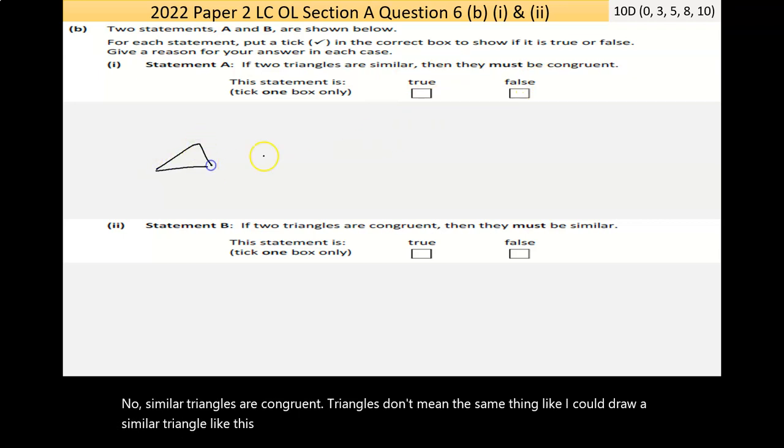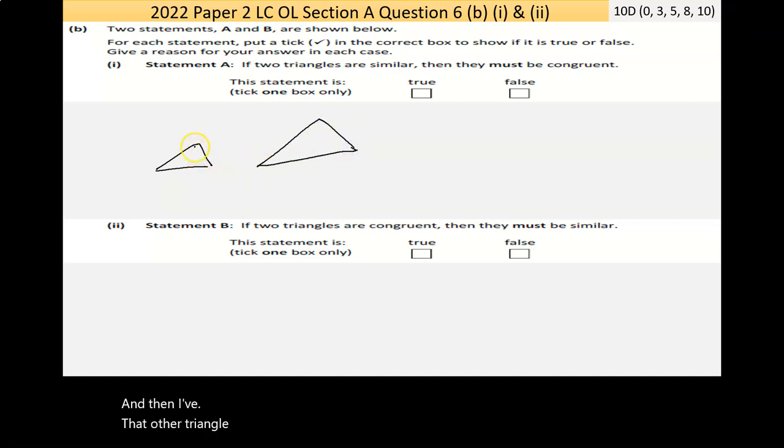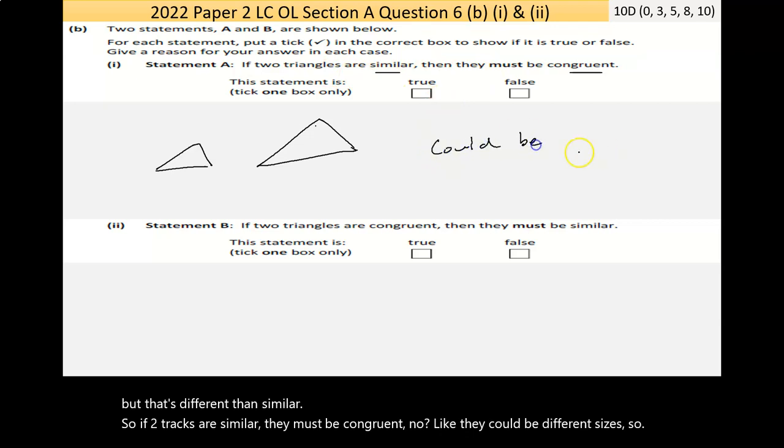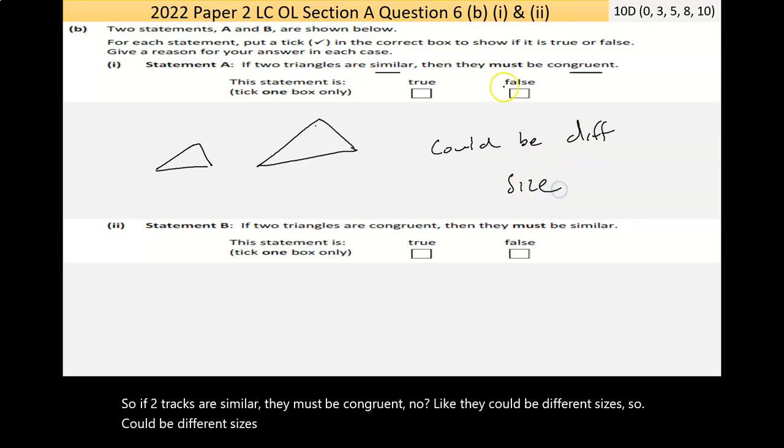Statement A says if two triangles are similar, then they must be congruent. Similar triangles and congruent triangles don't mean the same thing. I could draw a similar triangle with the exact same angles, but they're not the same triangle because they're different sizes. So that one is false.